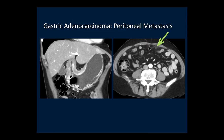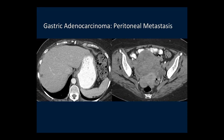The tumor may also spread to the peritoneal cavity. In one patient, we see circumferential wall thickening of the antrum, abnormal enhancement, and a small nodule in the omentum representing peritoneal metastasis. Peritoneal metastasis may implant on the ovaries; these are called Krukenberg metastases. In another patient, we see large bilateral ovarian masses, thickening of the gastric wall, and a liver metastasis in this patient with gastric adenocarcinoma.